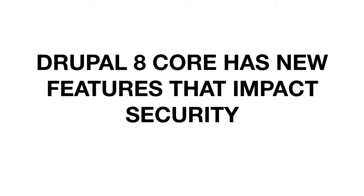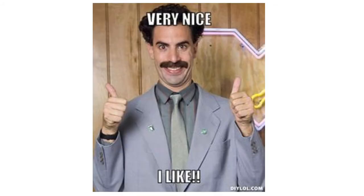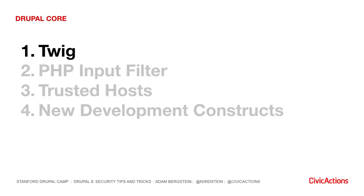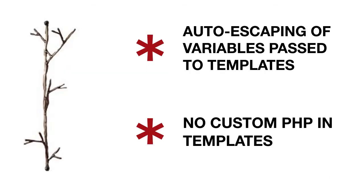Drupal 8 core has many new improvements that impact security directly. First and foremost, Twig — this is for all my front-end folks. Auto escaping of variables passed to templates — you do not need to worry about this anymore, it happens by default. They've also removed the PHP filter, and Twig doesn't even really support it. You have no more custom PHP in your templates, and you all should be thrilled about that.